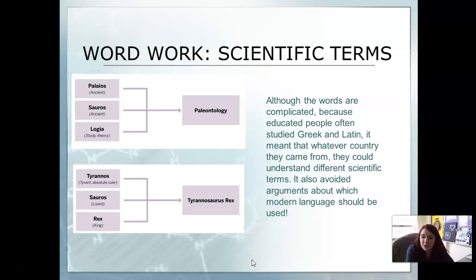Tyrannosaurus rex comes from Tyrannos or Tyran, meaning absolute ruler, Soros meaning lizard, and rex meaning king. So this shows that Tyrannosaurus rex is a ruler lizard king.